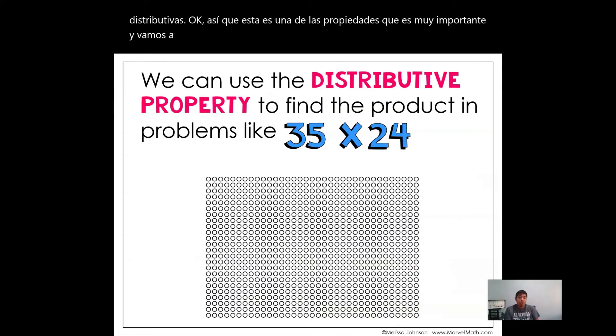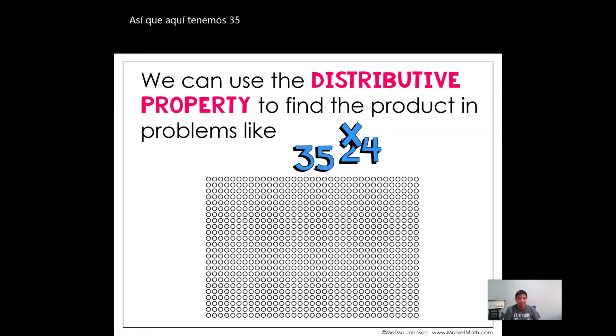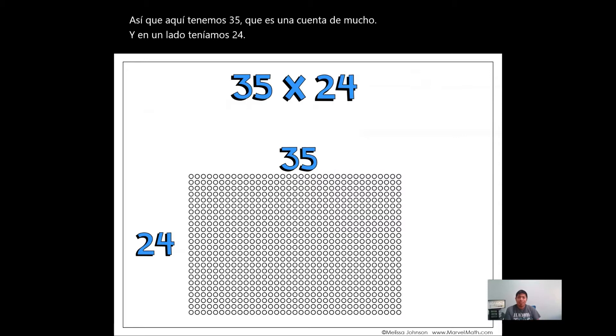We can use the distributive properties to find the products in problems like 35 times 24. These are factors, but we want to know our products. So here we have 35, which is a lot to count. And then on the side, we have 24. That's what that looks like: 35 times 24.